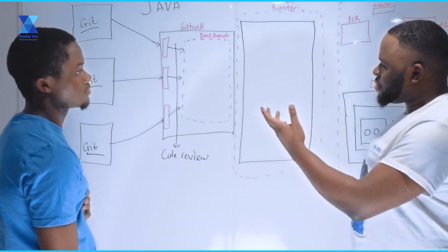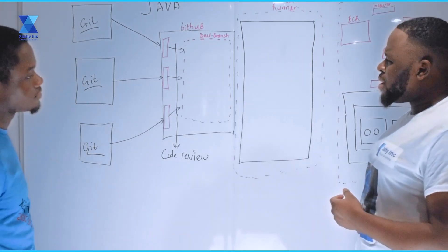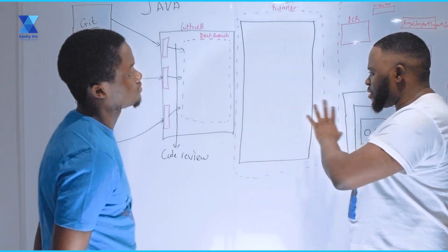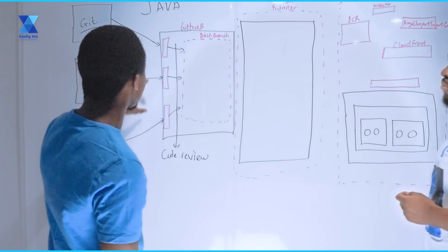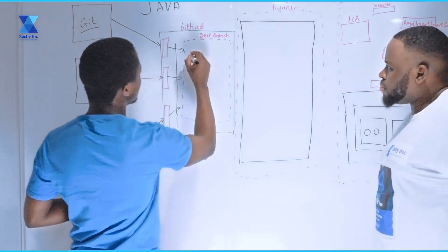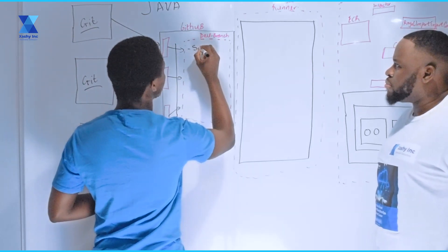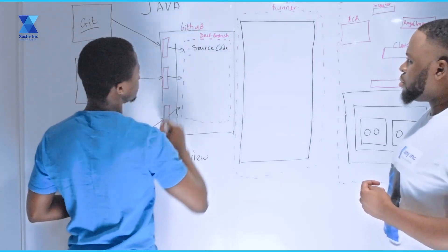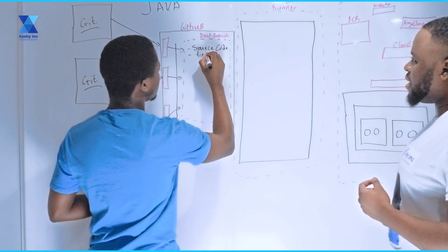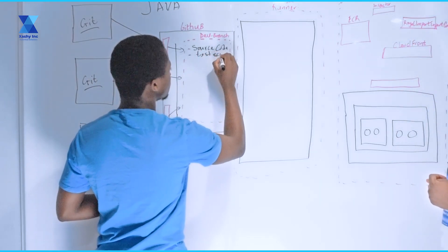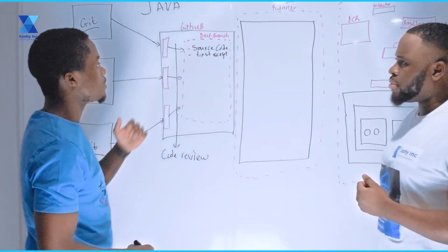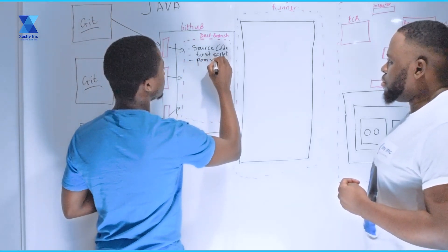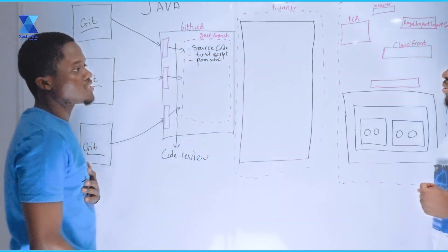You spoke about the developers writing and pushing files. What are some of the things expected from these developers as you continue with the process of building the application? The files expected from the developers are: first, the source code — the actual Java code for this application. We're also going to ask these developers to provide a test script, because this is going to be used to test the code for vulnerabilities. And then we're going to recommend them to provide the pom.xml file.